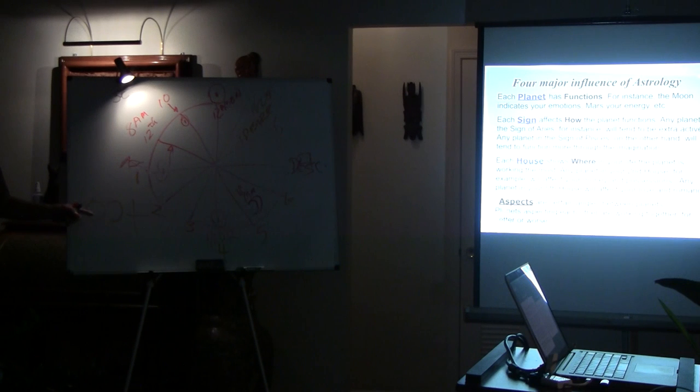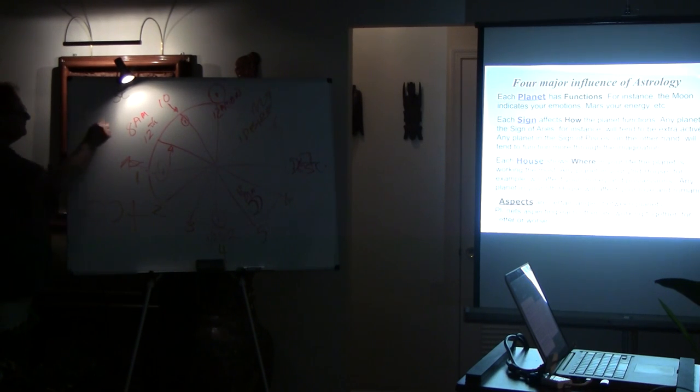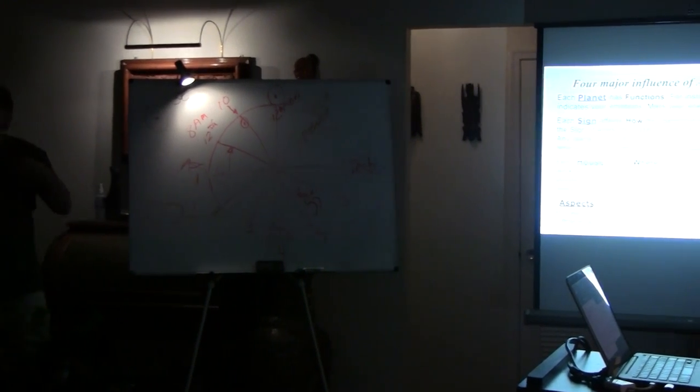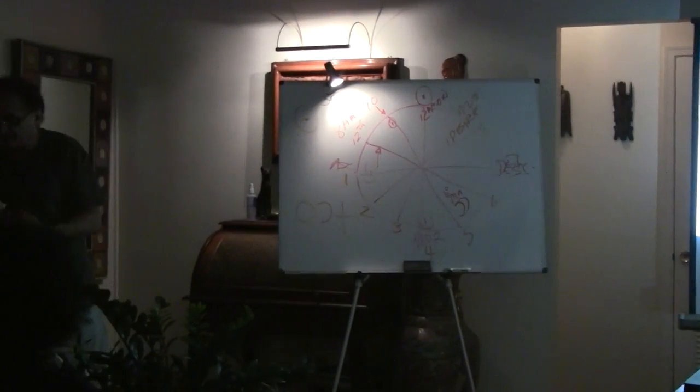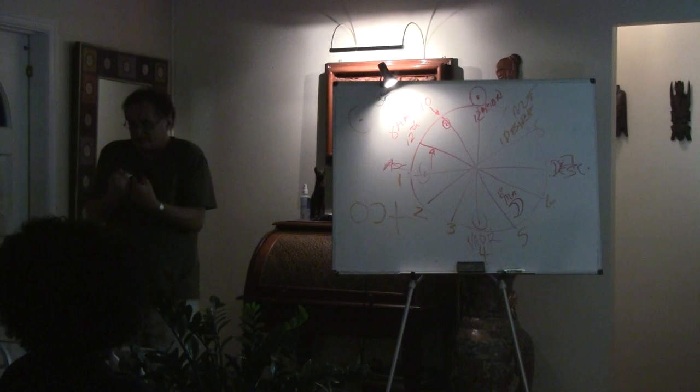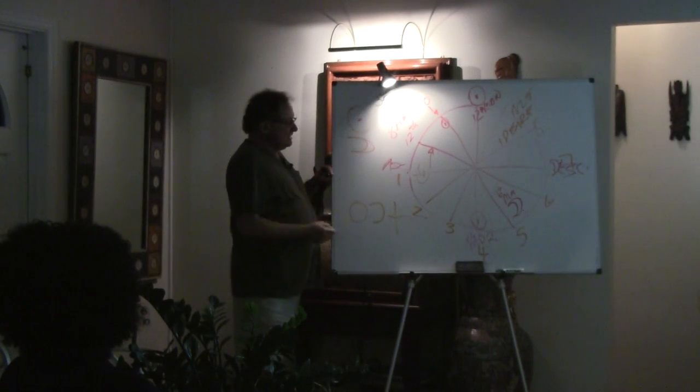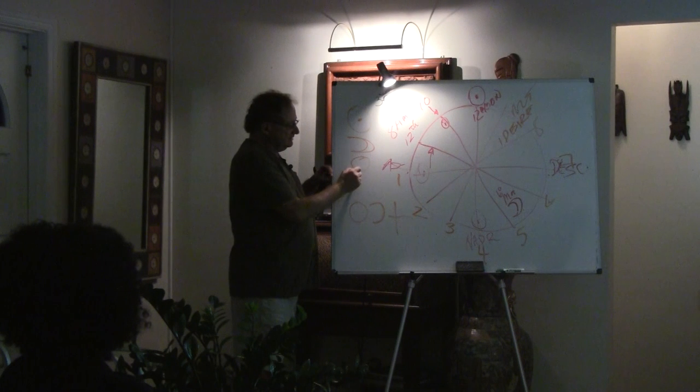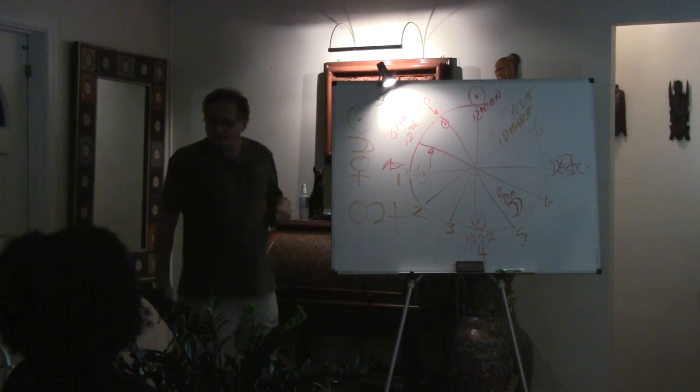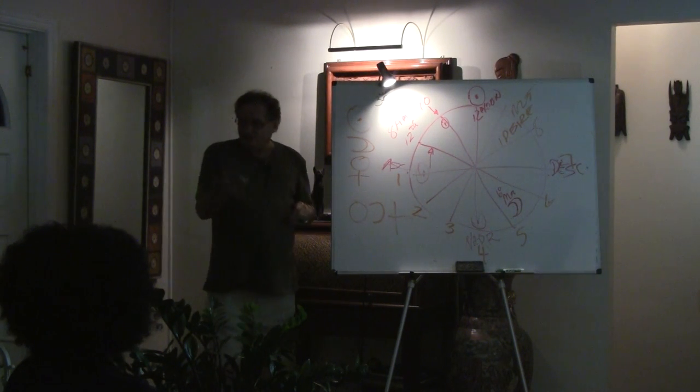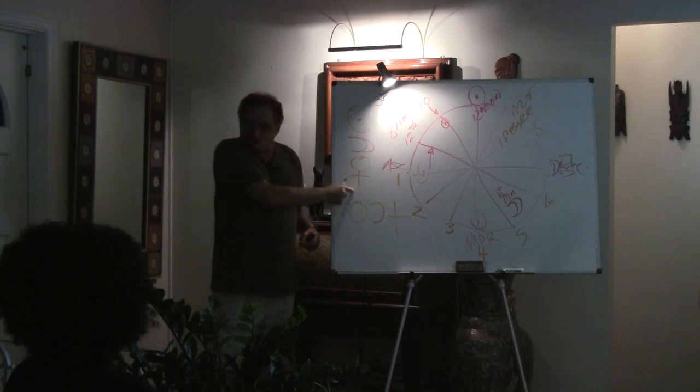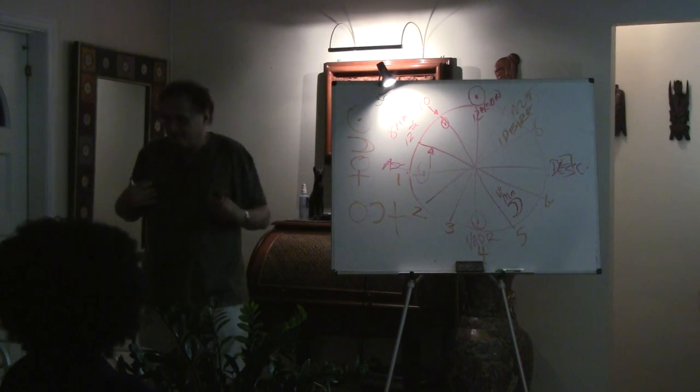Every planet, rather, is made up of that, not sign. So the sun is a circle with a dot in it. In other words, spirit is made manifest. It's brought into the focus. It's centralized. That's your sun sign. The moon is a double crescent. Venus is what? The circle over a cross.